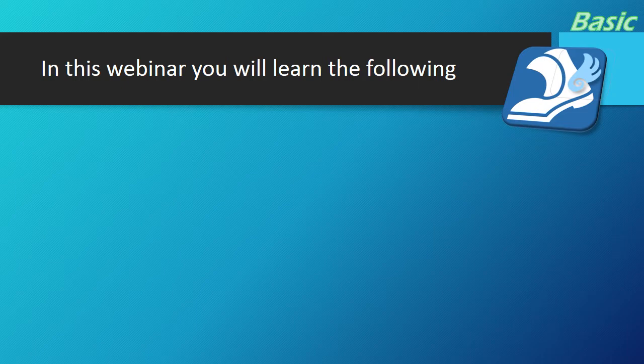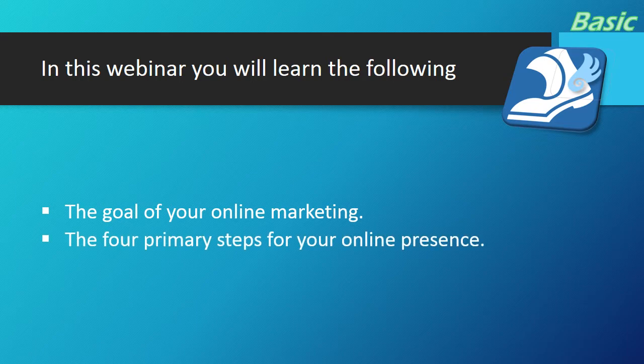In this webinar, we're going to give you three things. First is the goal of your online marketing — what it is to look like. The neat thing about digital marketing is it's completely measurable. The guesswork is gone. You know if it's working, you know if it doesn't. The day of guesswork is over for your online marketing.